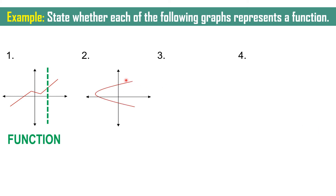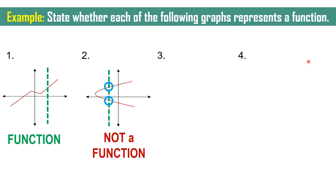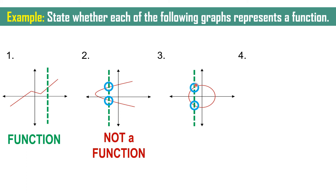Another example. You may draw a vertical line anywhere on this graph. As you can see, this vertical line intersects with two points on the graph. Therefore, this will not be considered as a function. Another example — we have a circle. Draw a vertical line anywhere on this graph. As you can see, the line intersects with two points on the circle. Therefore, this is not a function.